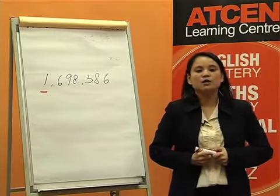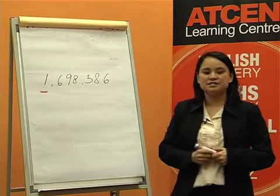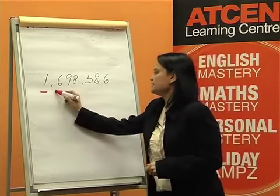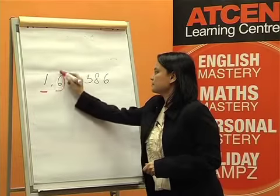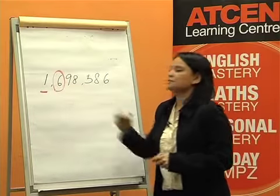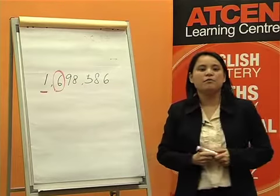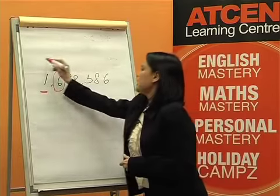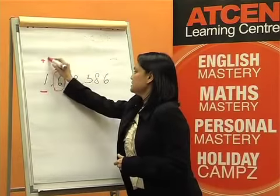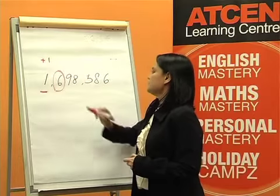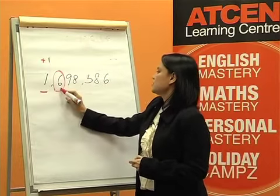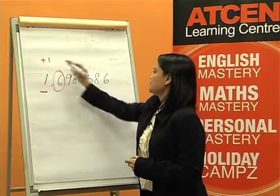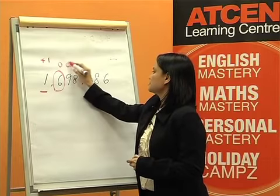Then, look at the next digit to the right. It is 6, which is 5 or more than 5. Add 1 to the preceding digit and change the digits to the right with zeros.